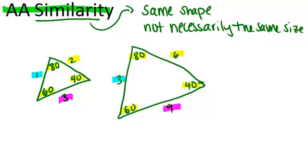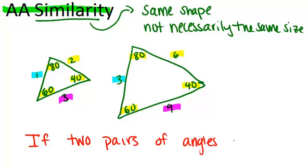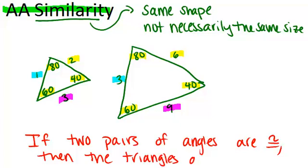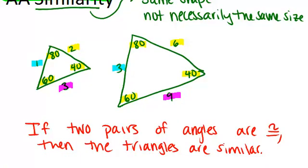What that means is if two pairs of angles are congruent, then the triangles are similar. So with two triangles, you don't have to necessarily check all the angles and all the sides. If just two pairs of angles are congruent, that means that the triangles will be similar.